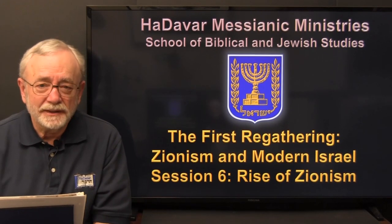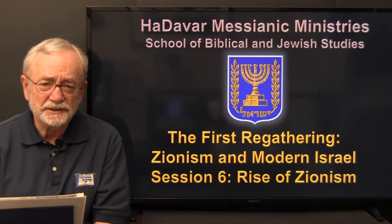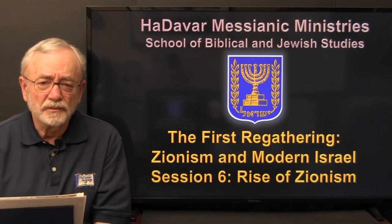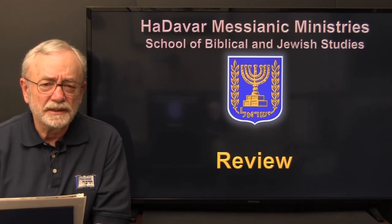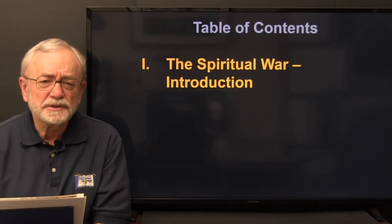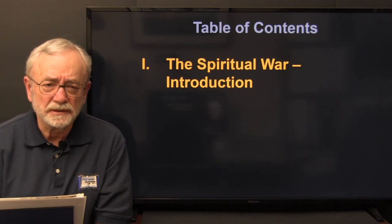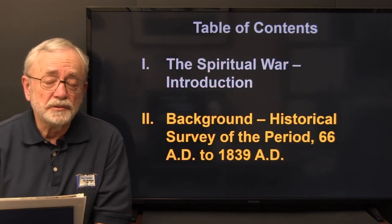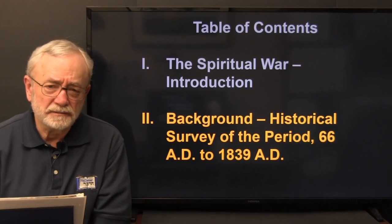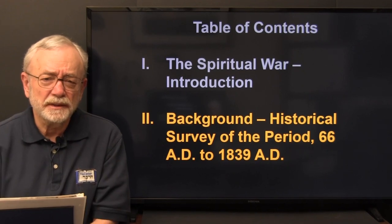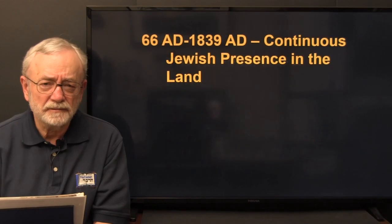Shalom. Welcome to our next session in the first regathering: Zionism and the modern state of Israel. We're in session number six dealing with the rise of Zionism. Let's take a quick review look at where we've been in previous sessions. We started out with Roman numeral one, the spiritual war, introductory material to the class. Then we moved to Roman numeral two, the historical background of Zionism from 66 AD to 1839 AD.